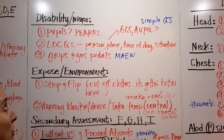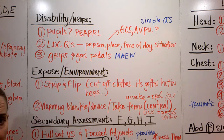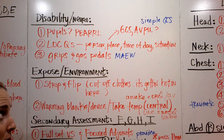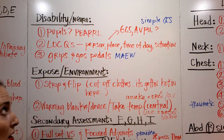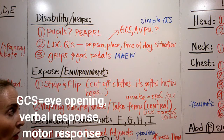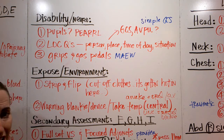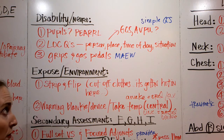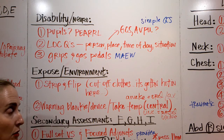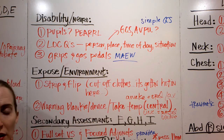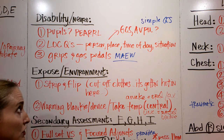D is disability or neuro. Get a basic neuro assessment — not the detailed one like with stroke patients, just basic. Look at pupils: equal, round, and reactive to light, they accommodate. Ask your LOC questions: person, place, and time. AVPU is a simplified GCS — Awake, Verbal, Pain, or Unconscious. Get a full GCS as well. Do grips and gas pedals: have them squeeze your hands and push down with their feet on your hands. We're just establishing whether they can move all extremities.